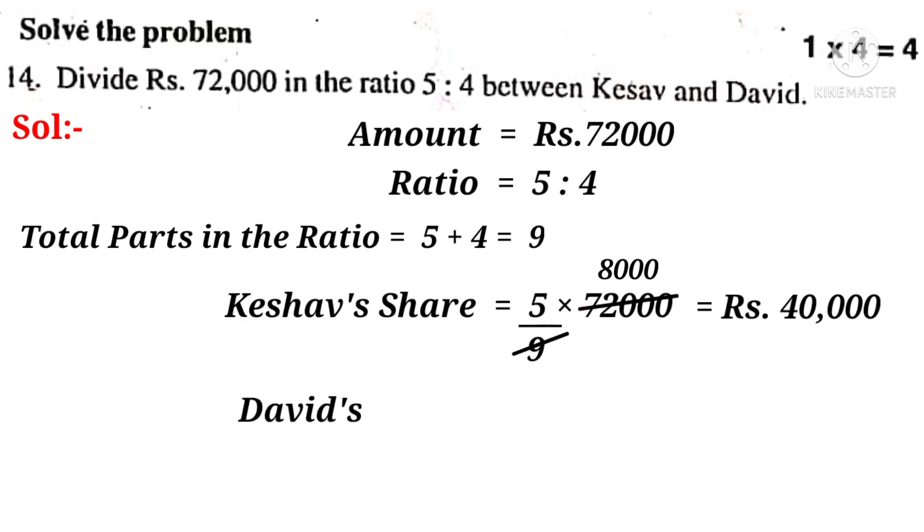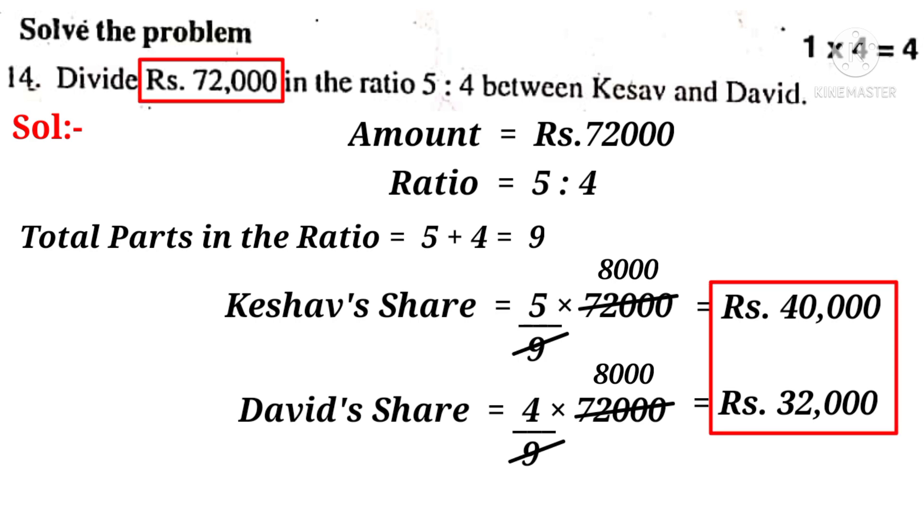Now let us find out David's share is equal to 4 parts by total parts 9, that is 4 by 9 into 72,000. On simplification by 9, 9, 8,000 times. That is equal to Rs. 32,000, because 8,000 into 4 gives Rs. 32,000. Also observe that the sum of Rs. 40,000 and Rs. 32,000 gives Rs. 72,000 which is in the problem. So our answer is correct.